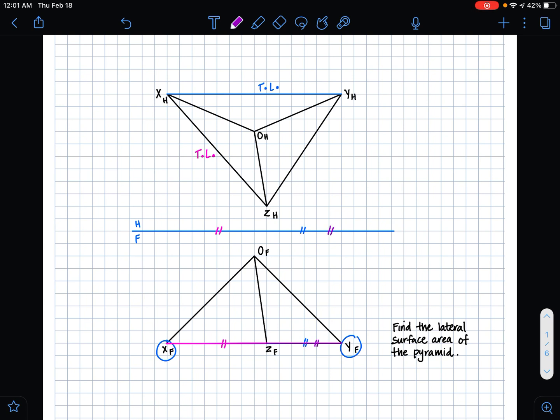And similarly for line ZY, this line is parallel to our HF folding line, and therefore in our adjacent horizontal plane, line ZY is a true length. So since we have a true length on all three lines that make up this triangular base, that means that we have a true shape.